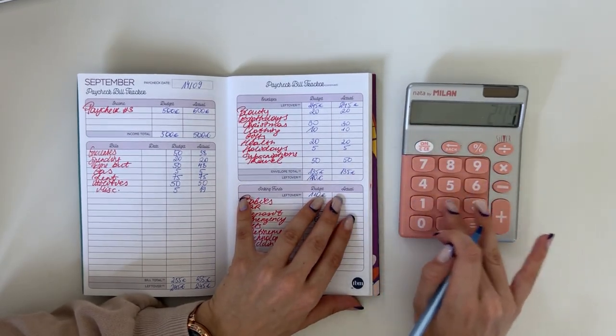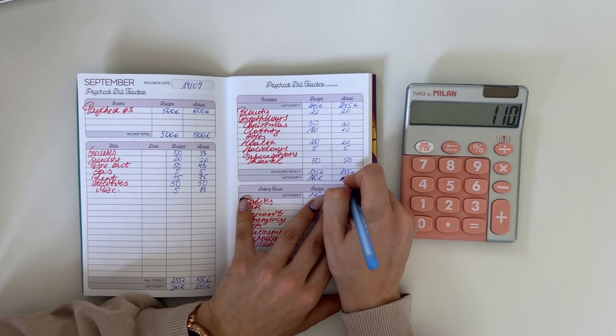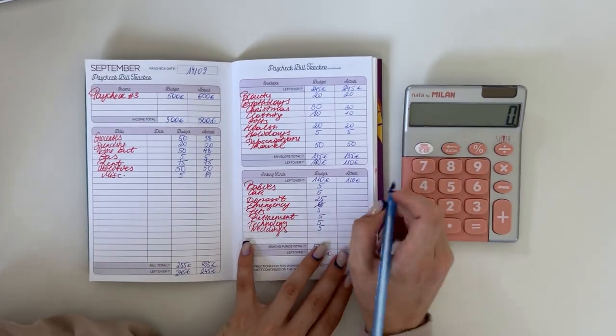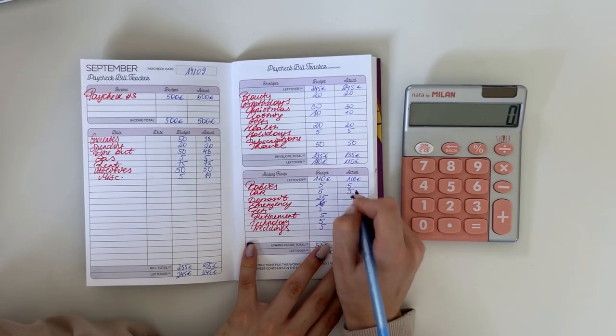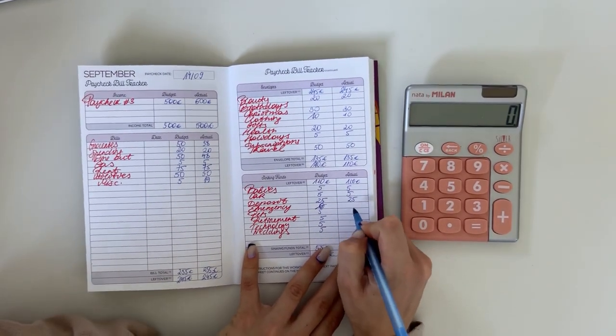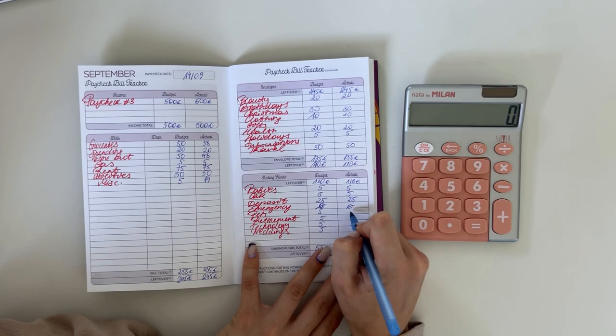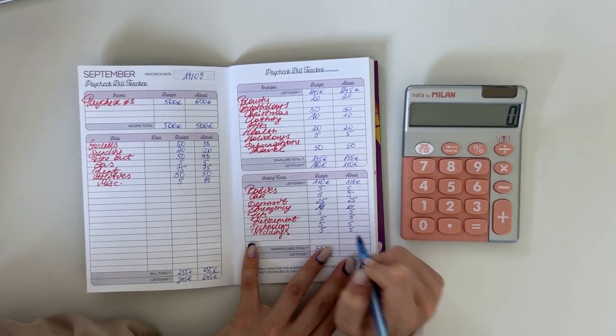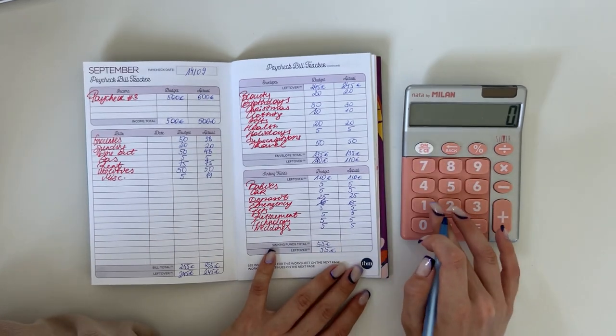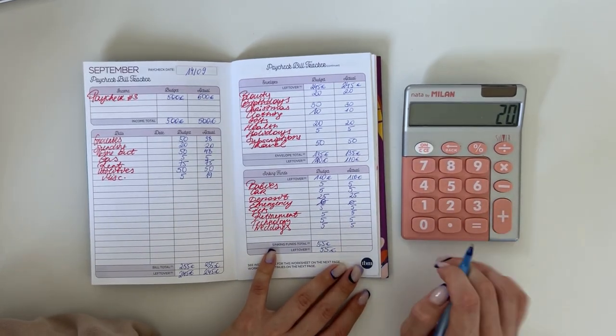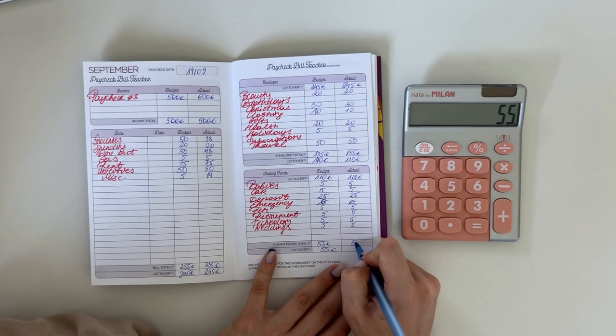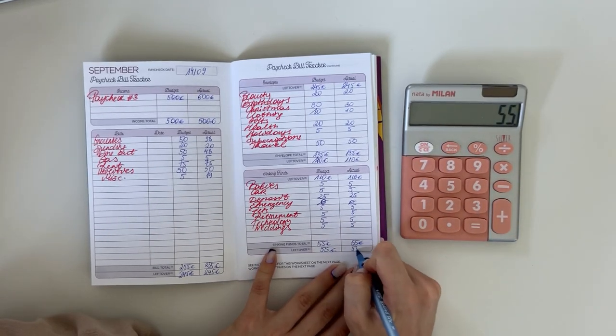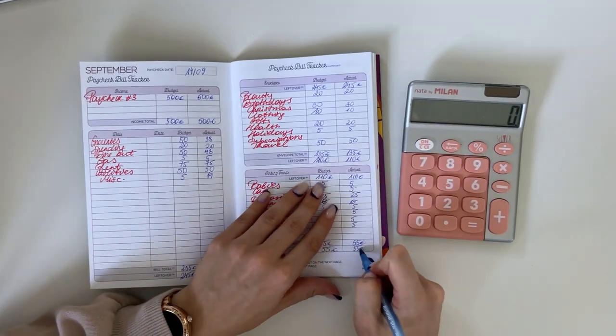So 245 minus 135 is 110. For long-term sinking funds we put five into babies and five into car, 25 in deposit, nothing in emergency because that's fully funded, and then we put five in each pets, retirement, technology, and weddings. That was in total 55.